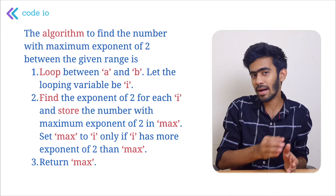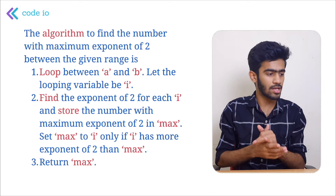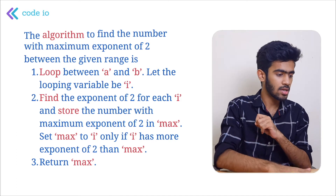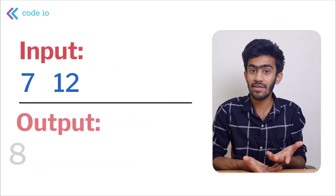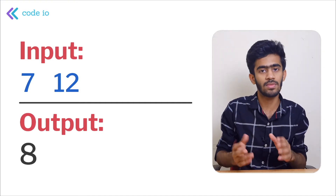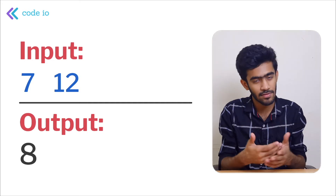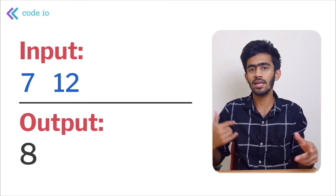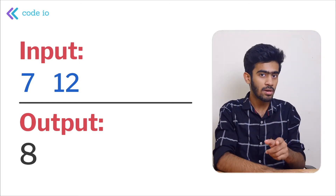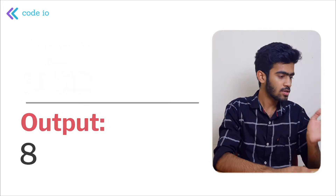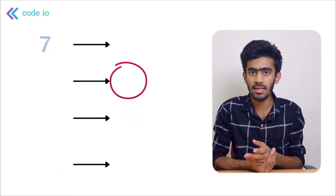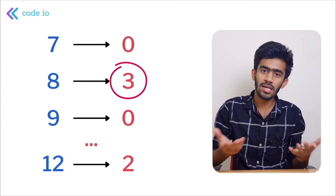We have to find the maximum exponent in the given range from a to b. Let us move to the sample input and verify. We are given 7 and 12 as inputs, so we range from 7 all the way up to 12. We find the exponent of each number by dividing by 2 and checking perfect divisibility, and count the iterations. The output is 8, which has the maximum exponent of 3.